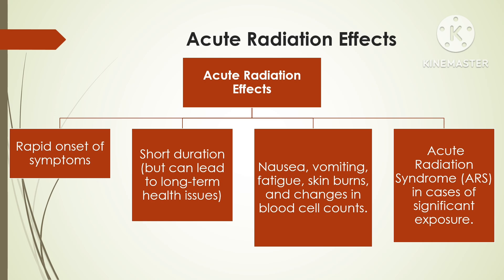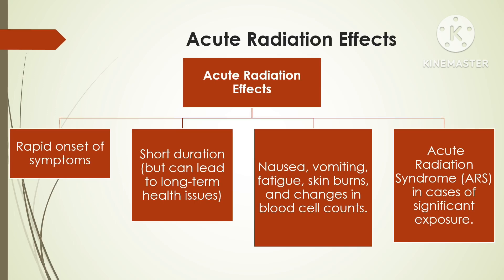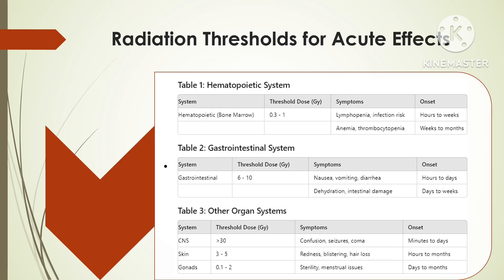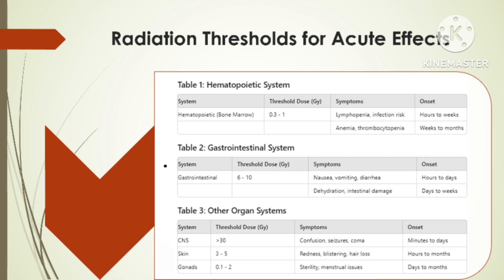Based on time, acute reactions are immediate or short-term responses to radiation exposure occurring shortly after a high dose is received. These effects typically manifest within minutes to weeks of exposure and are often linked to a specific incident or high-level exposure. Chronic effects are the long-term health consequences arising from prolonged or repeated exposure to lower dosages over an extended period. The bone marrow is affected first by radiation exposure at very low dose, while the central nervous system is typically affected last, with acute effects occurring at much higher doses.